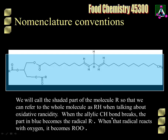When the allylic CH bond breaks, the part in blue becomes the radical R dot, so the radical — the one electron — will end up associated with this part of the molecule. When that radical R dot reacts with oxygen, it becomes ROO dot, and those are the two species we're really interested in: R dot and ROO dot.